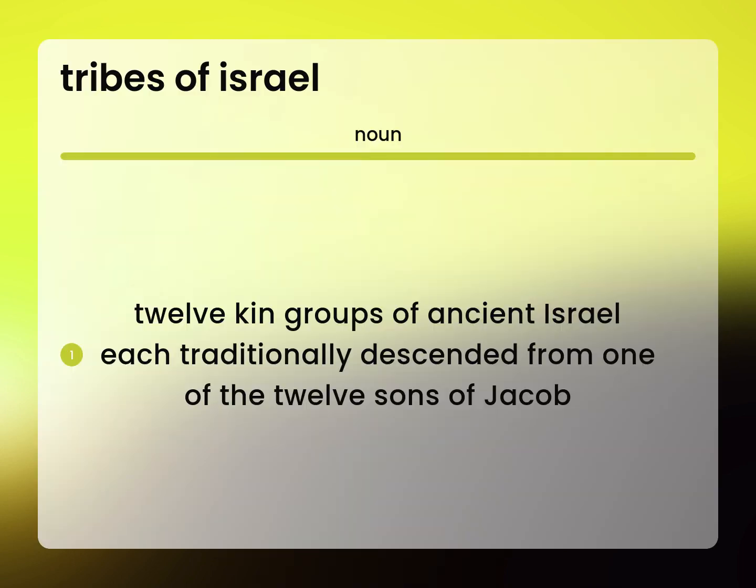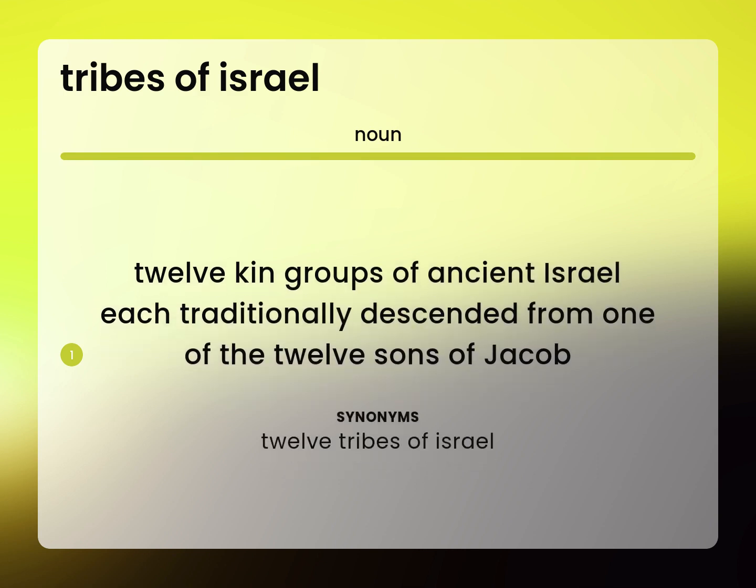Language.Foundation's Video Dictionary, helping you achieve understanding. Twelve kin groups of ancient Israel, each traditionally descended from one of the twelve sons of Jacob. Twelve tribes of Israel.